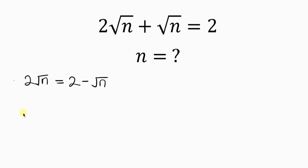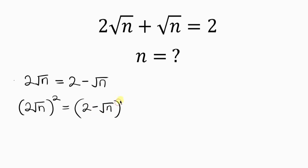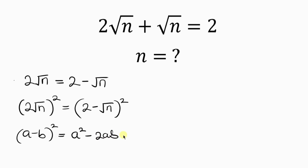Our next step will be to square both sides — the left hand side and the right hand side — so we have 2 minus the square root of n, all squared. The right hand side is of the form a minus b, all squared, which expands as a squared minus 2ab plus b squared.